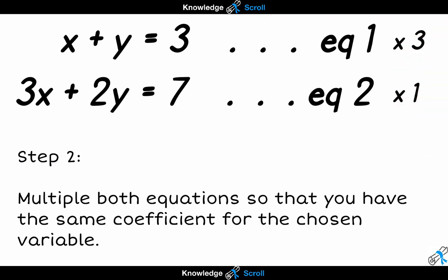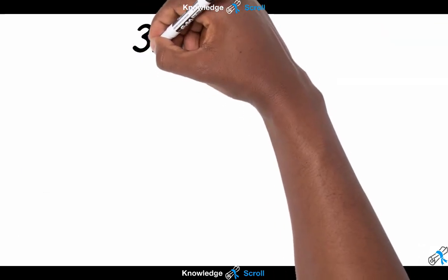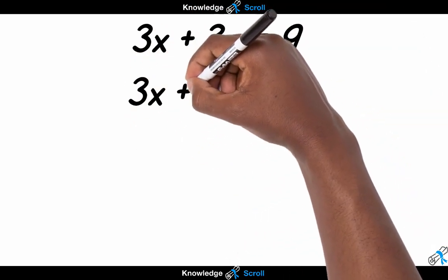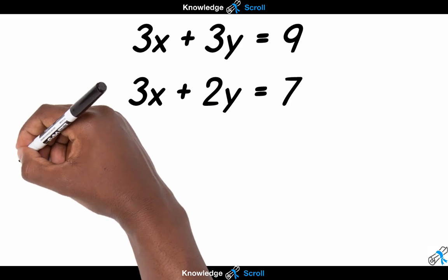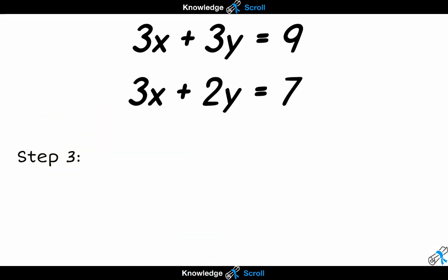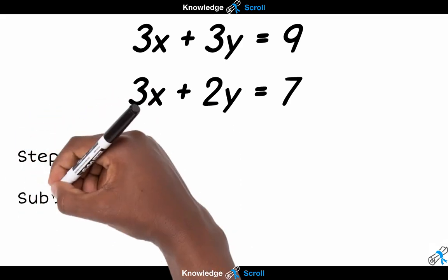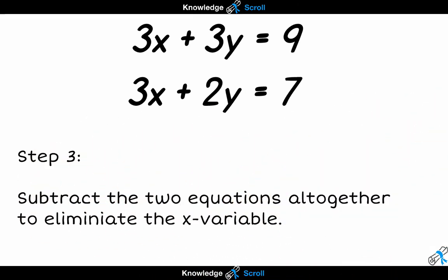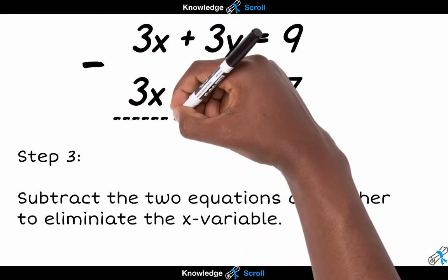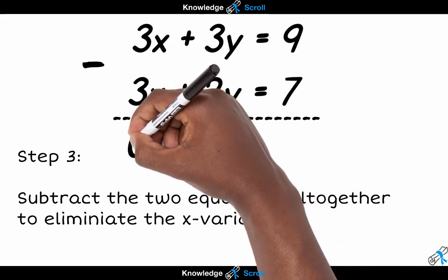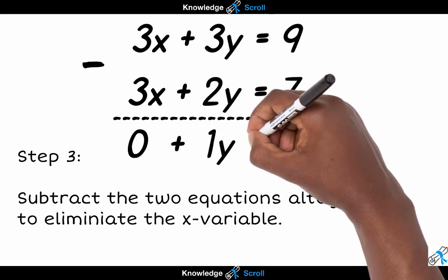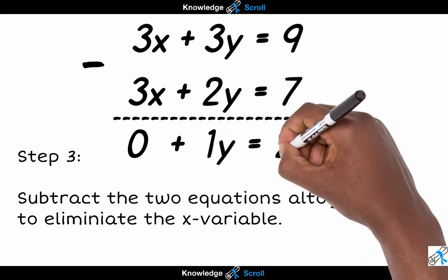Now in step 3, we can inspect the two equations again. We can see that by subtracting the second equation from the newly modified first equation, you should be able to remove the x variable. 3x take away 3x equals 0, and 3y take away 2y equals 1y, and 9 take away 7 equals 2. So we can see that y equals 2.